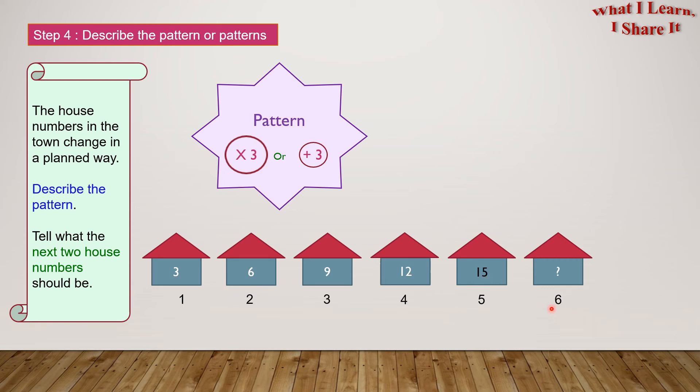And what is 6? Yes, it's 18! The next two house numbers will be 15 and 18.